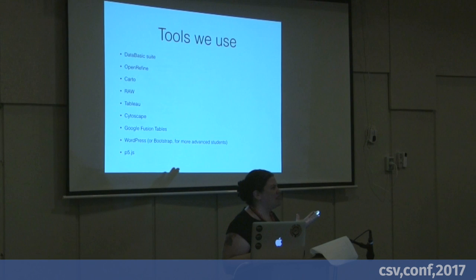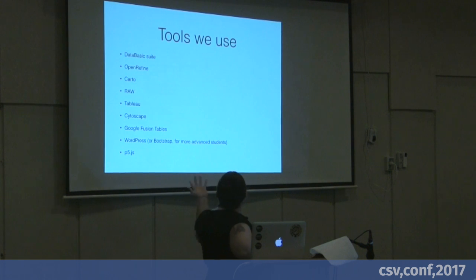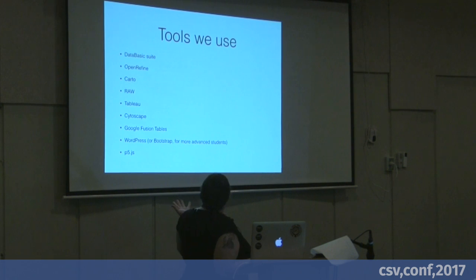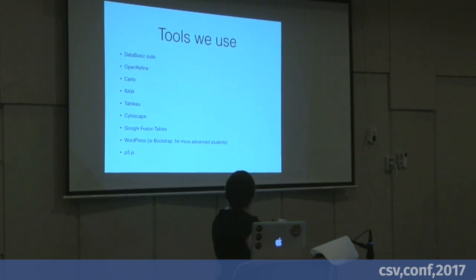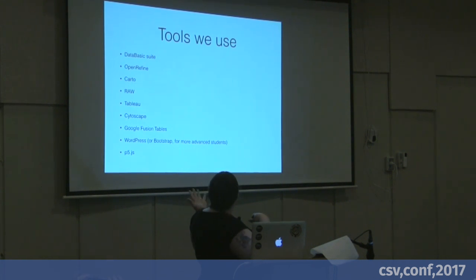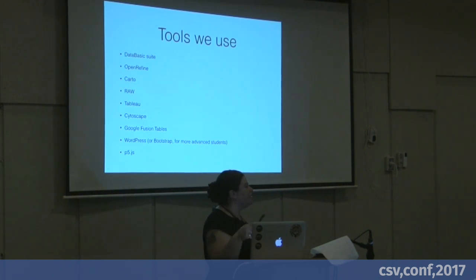This is the suite of tools we tend to use in my class. DataBasic is a wonderful teaching tool — you can drop a CSV in and it'll tell you what each of the fields are. OpenRefine for cleaning, Carto for mapping — though I'm unhappy about their new interface — RAW is a really nice data visualization package, Tableau, Cytoscape, Fusion Tables, WordPress, and p5.js, which I wanted to flag as something we're more and more interested in using for our students.